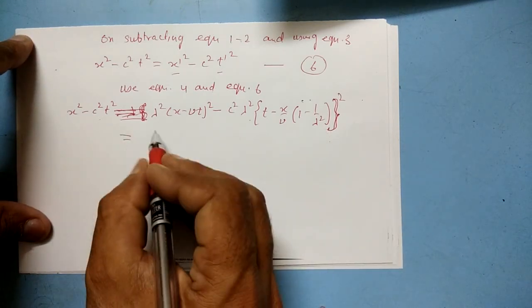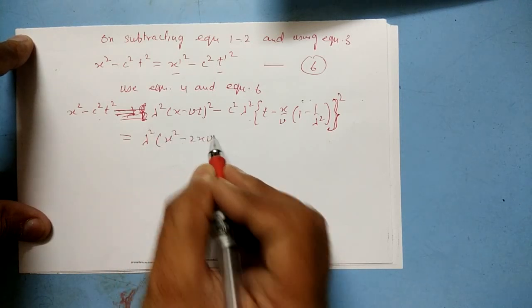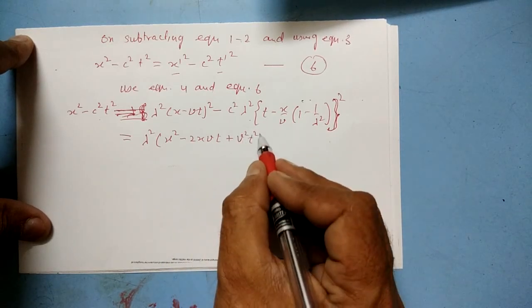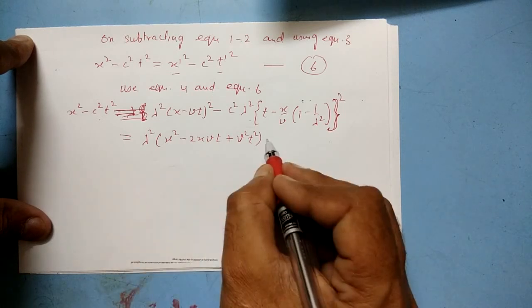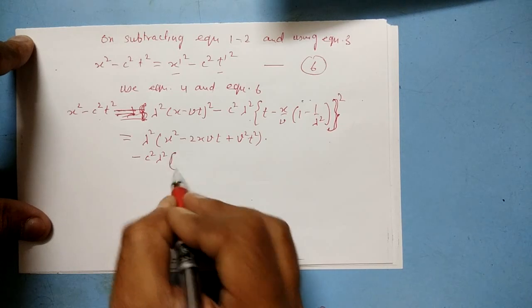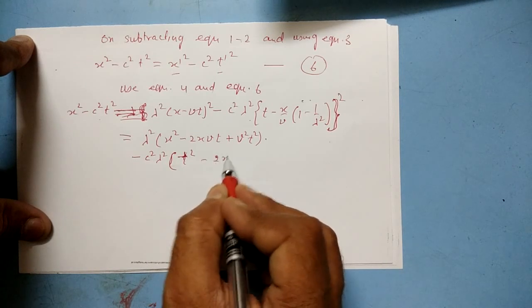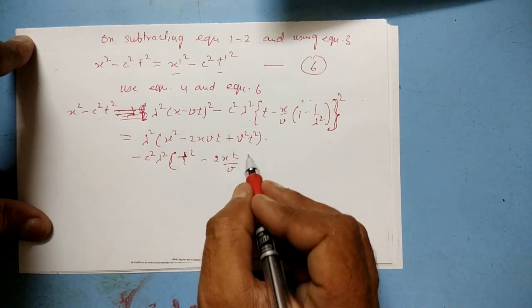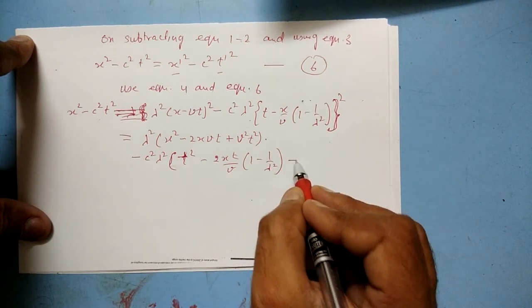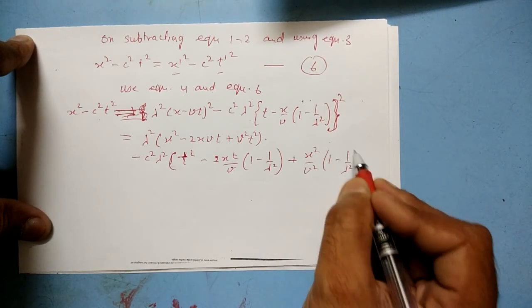Simplifying, we get λ²(x² - 2xvt + v²t²) minus c²λ²(t² - 2xt/v) times (1 - λ²) plus x²v²(1 - λ²)².